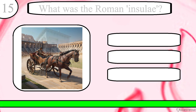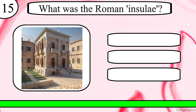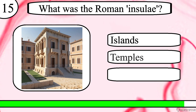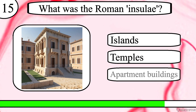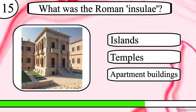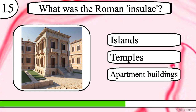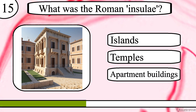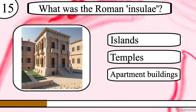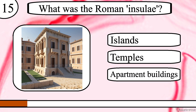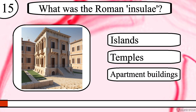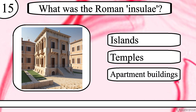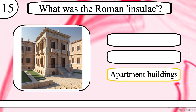Question 15. What was the Roman insulae? Islands, temples or apartment buildings? The correct answer is apartment buildings.